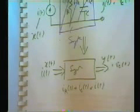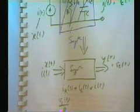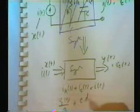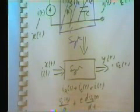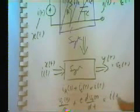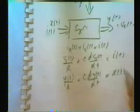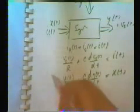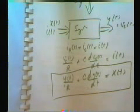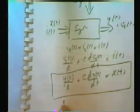I_R is what? I_R is V_C(t) divided by R, right? How about I_C? I_C is C times dV_C/dt, and that equals I(t). So V_C, oops sorry — Y(t)/R plus C times dY(t)/dt is equal to X(t). So that is the differential equation — that is the relationship between the input and the output.